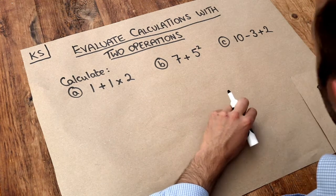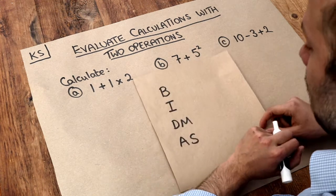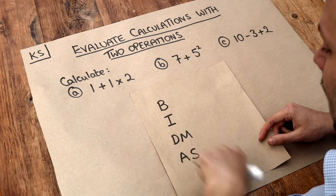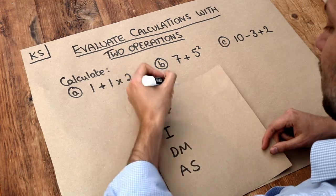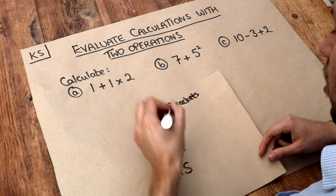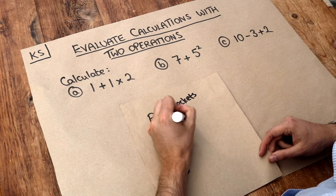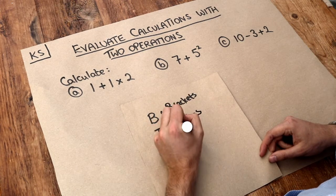And the rules we use to do that is something called BIDMAS. Now here's what each of the letters stand for. B stands for brackets. I stands for indices, which is just a posh word for powers.